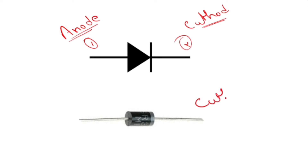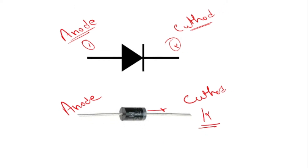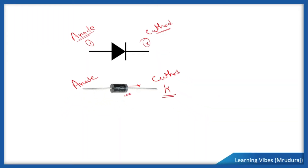Whenever you see the real diode, this silver lining represents the cathode. In this condition, the silver lining is on this side, so this terminal is the cathode terminal. Where there is no silver line, that terminal is the anode terminal. This is one of the easiest methods to identify the terminals of a diode — wherever you find the silver line, that terminal is the cathode, and where there is no silver line, that terminal is the anode. The anode terminal is the positive terminal and the cathode terminal is the negative terminal.